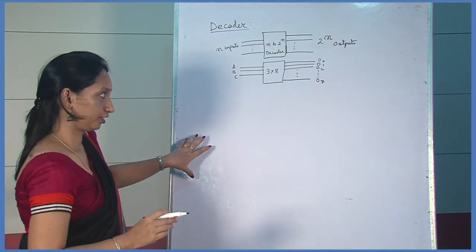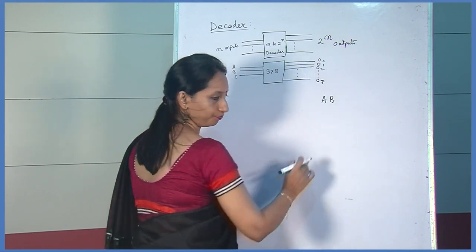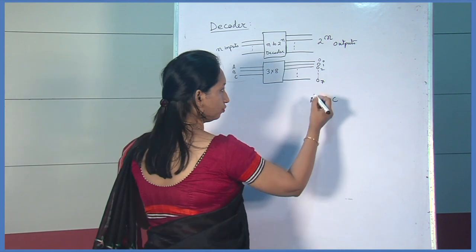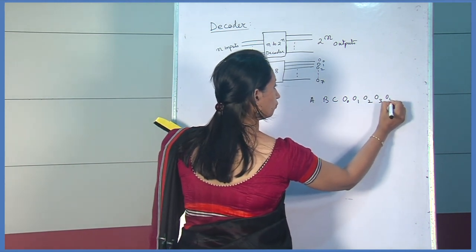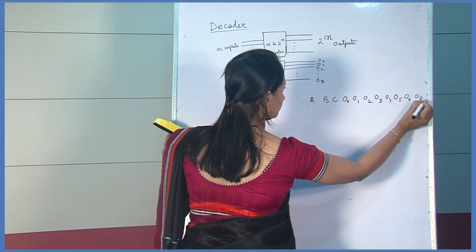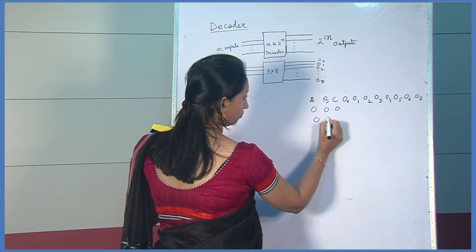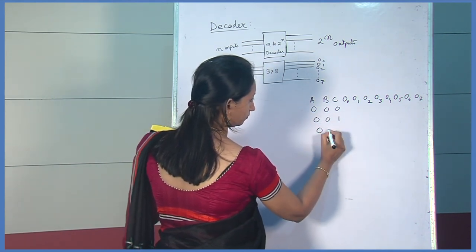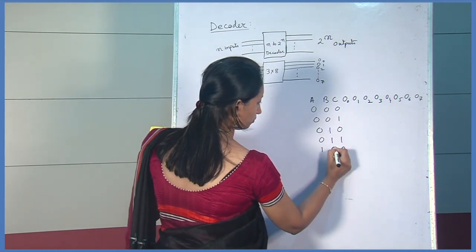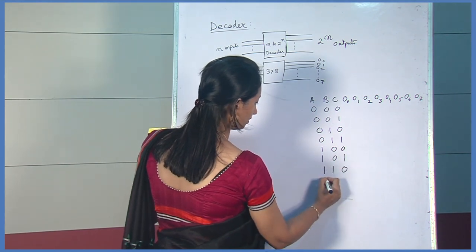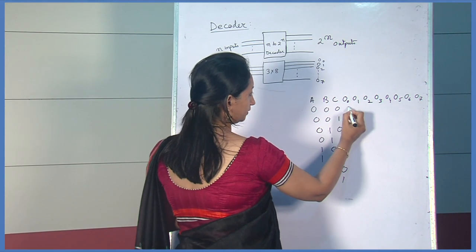Now we see the logic circuit and the truth table. Since there are 3 inputs, we have given A, B, C. These are the 3 inputs and the outputs are O0, O1, O2, O3, O4, O5, O6, and O7. For the 3 inputs, the combinations are: 0,0,0 then 0,0,1. When all 3 inputs are 0, then output O0 is selected, so this is 1.